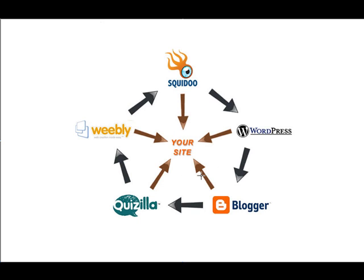As you can see from this diagram, we have got a wheel of different online properties that have got high page rank, such as Squidoo and WordPress. You can open a free account on these websites and place unique content on there and link back to your main site. So you will be building links for your main site and taking the juice from these high PR domains.